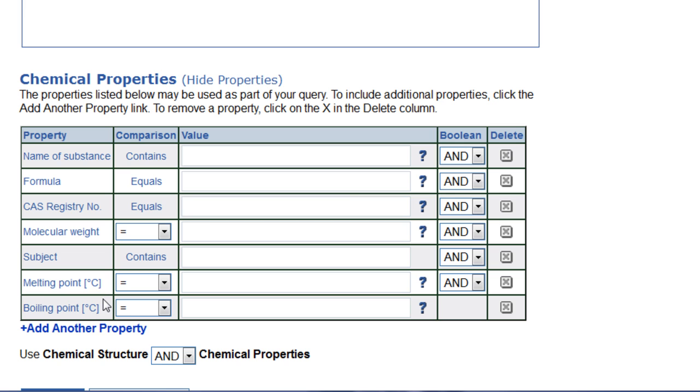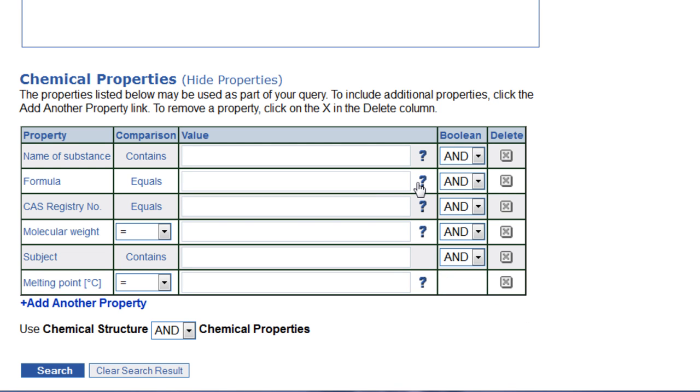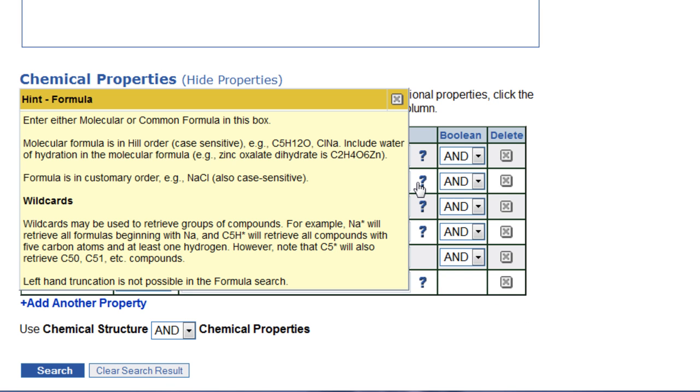The new search boxes will appear at the bottom of the list. You can also remove a property by clicking the X in the far right column. For hints on how to enter information for a particular property, click the question mark to the right of its value box.